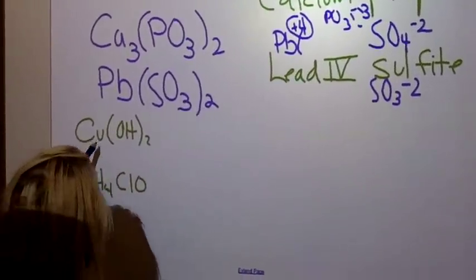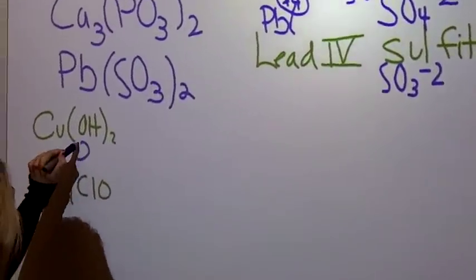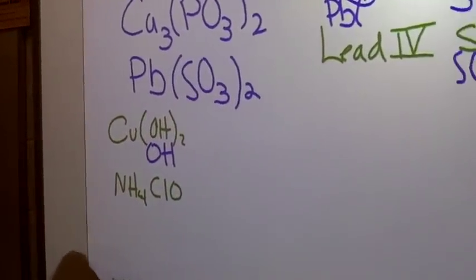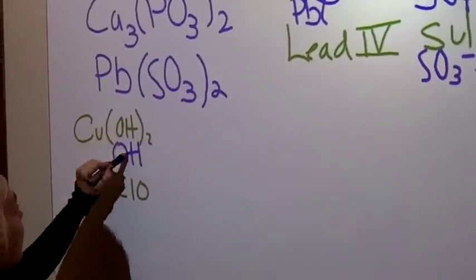For Cu, you don't know the charge yet, but you can figure it out by going backwards. You have to know the charge because it's a transition metal.